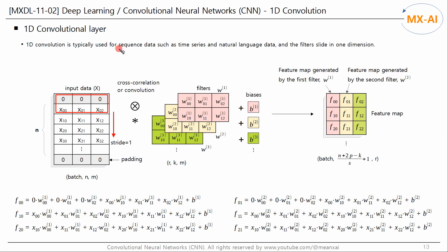1D convolution is typically used for sequence data such as time series and natural language data, and the filters slide in one dimension. The input data X is three-dimensional: the first dimension is the batch size, the second dimension is the number of rows (the length of the sequence, N), and the third dimension is the number of columns (the number of features or the size of the embedding vector, M).